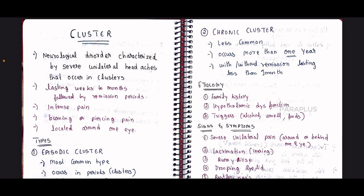Cluster headache is a neurological disorder characterized by severe unilateral headaches. It is similar to a migraine, involving severe unilateral pain that occurs in clusters — for example, in January and February, then it stops, and then after about 6 months, the pattern repeats.